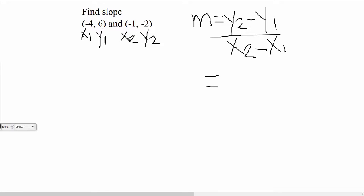So y2 for my particular example here is a negative 2 minus y1, which is a 6, over x2, which is negative 1, minus x1, which is negative 4.